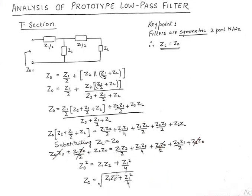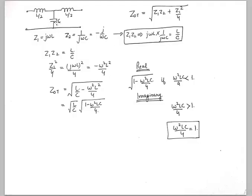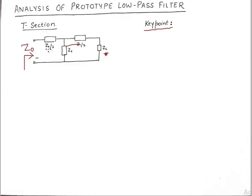Once we have Z0, we can design the low-pass filter. We know that in the T section the series arm Z1 has total impedance jωL (from L/2 and L/2 in series), and the shunt arm Z2 has total impedance 1/(jωC). We compare these with the standard two-port network notation where Z1 is the series arm and Z2 is the shunt arm.